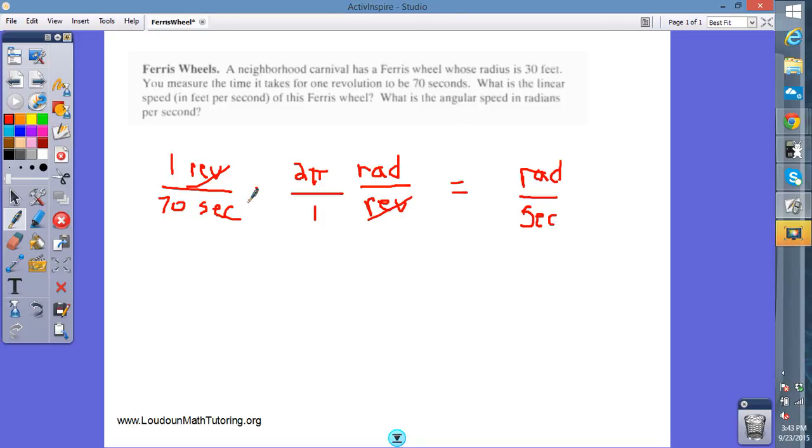2π is the same as 360 degrees when you're on your unit circle. Our revolutions will cancel. We're going to end up with radians per second. So think of it as 2π divided by 70.